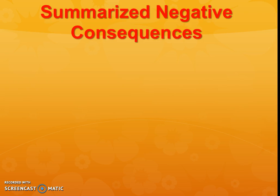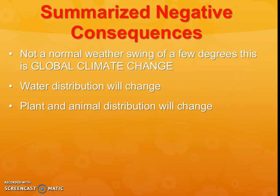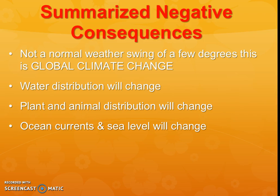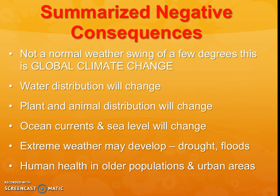To summarize the negative consequences overall: with this abnormal weather, just a couple degrees of change is shifting the whole global climate. This will change how water is distributed, seen through weather patterns and drinking water availability. Plants and animals will shift through biome shifting. Ocean currents and sea levels will change. Those extreme weather events are going to cause droughts and floods, and human health and populations in urban areas are going to be negatively affected.